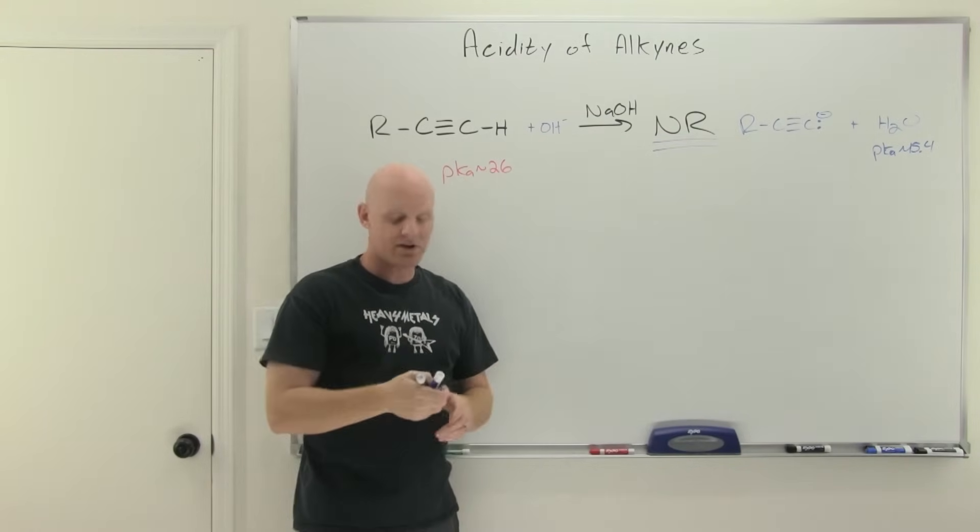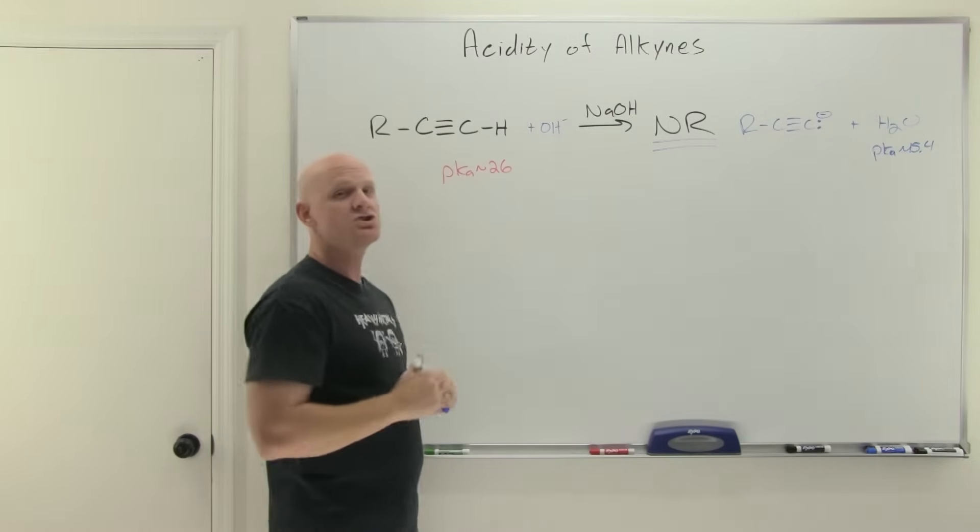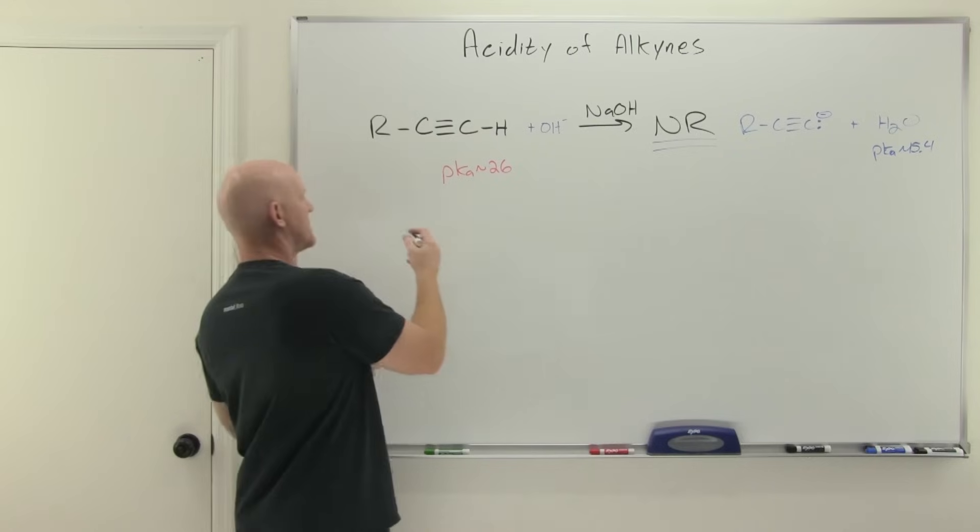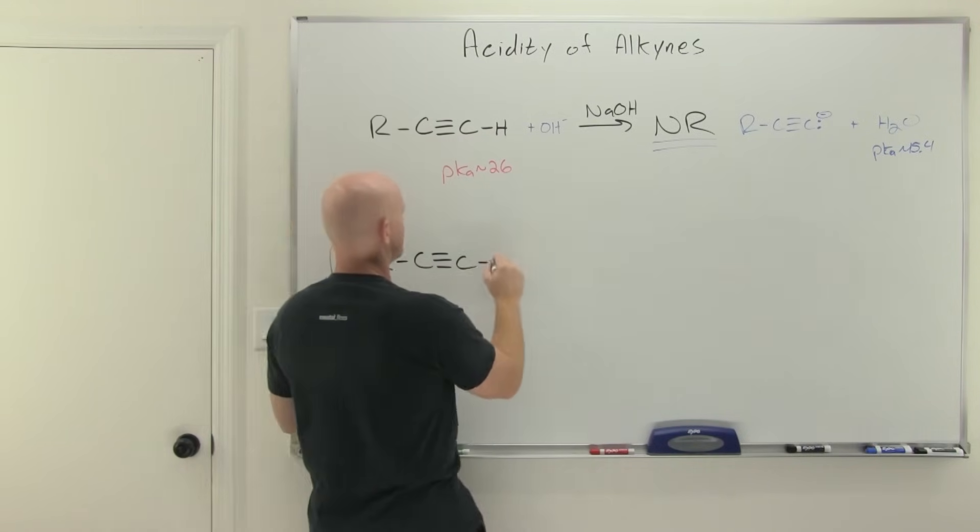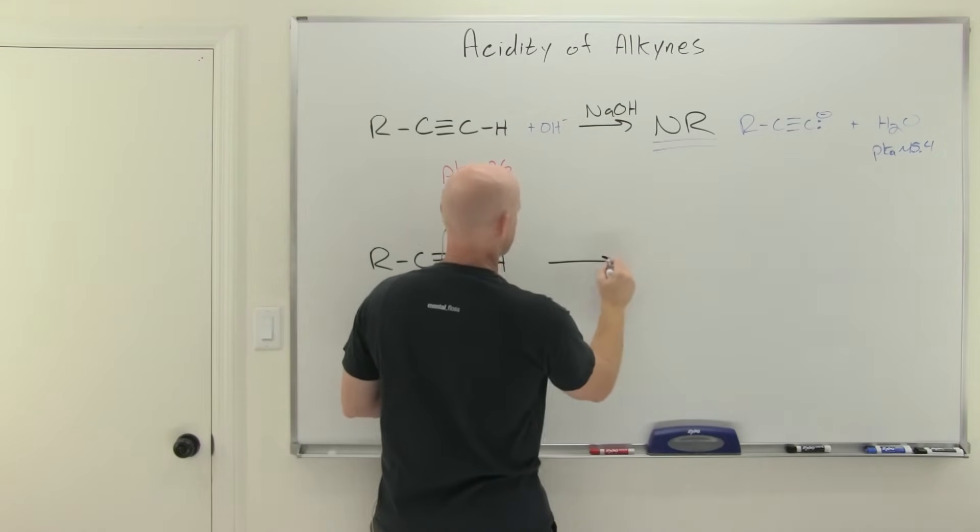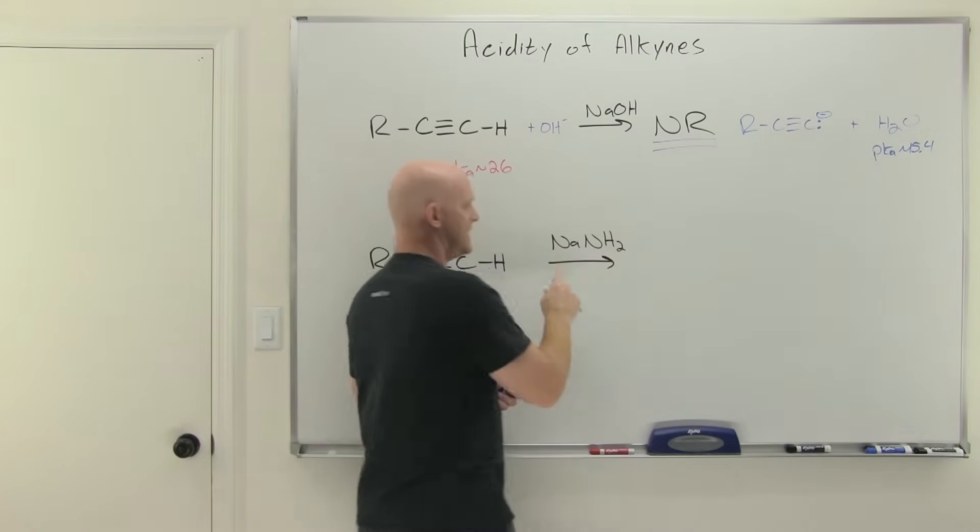So if you're going to want to deprotonate a terminal alkyne you're going to have to have a new strong base. New and improved that's significantly stronger than sodium hydroxide. And fortunately we have one. And we referenced this back also in our chapter on acids and bases. And it turns out this new one here is sodium amide, NaNH2.